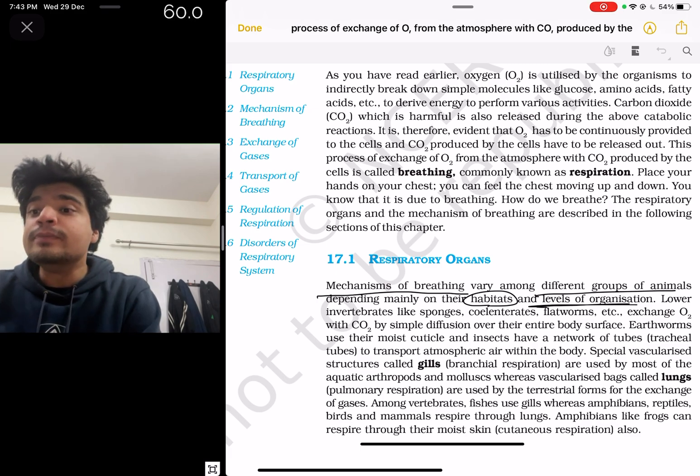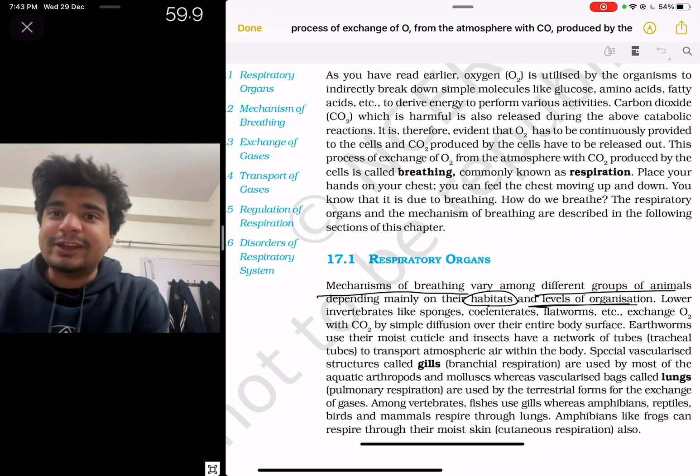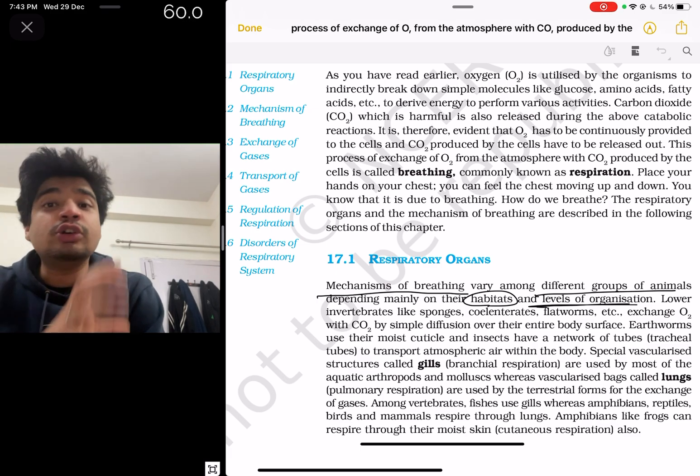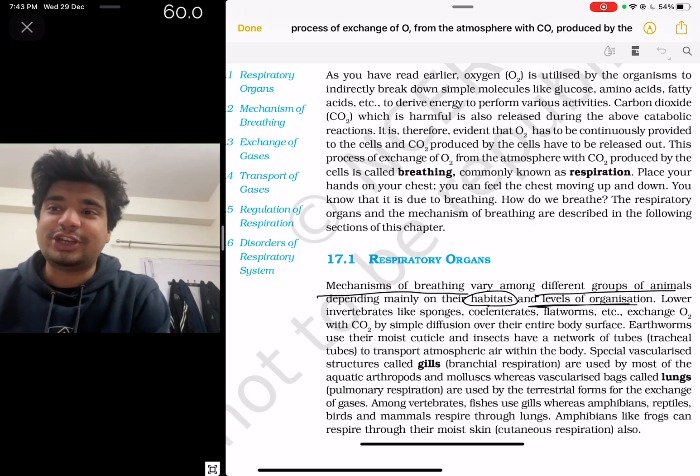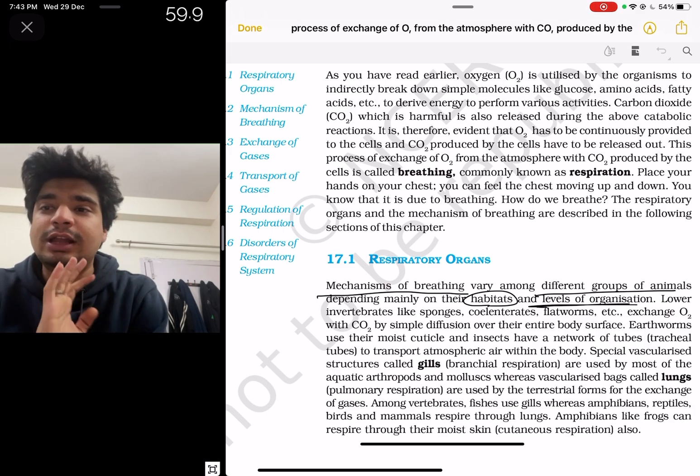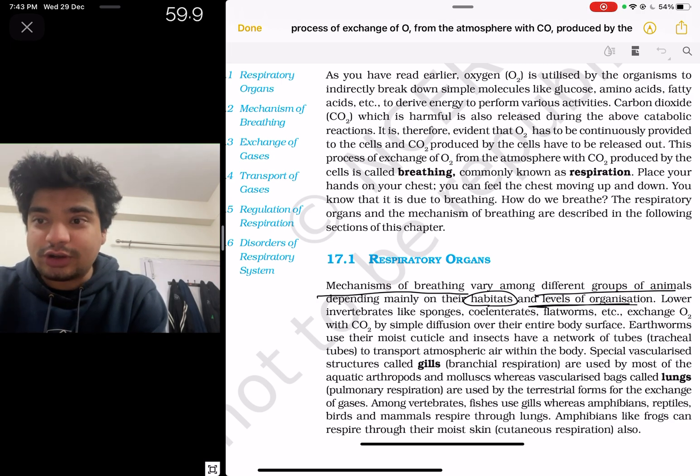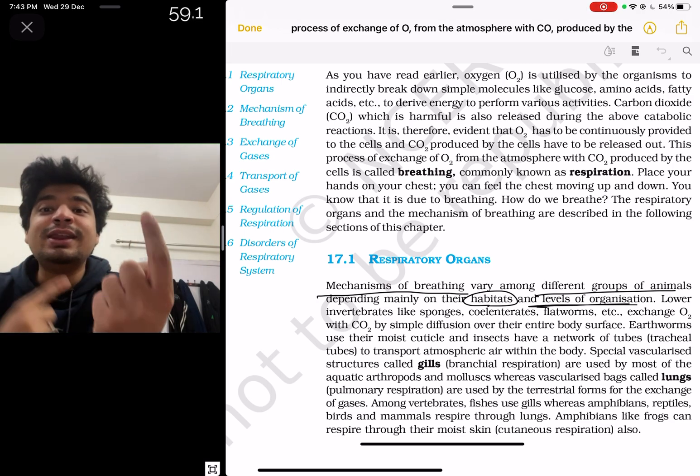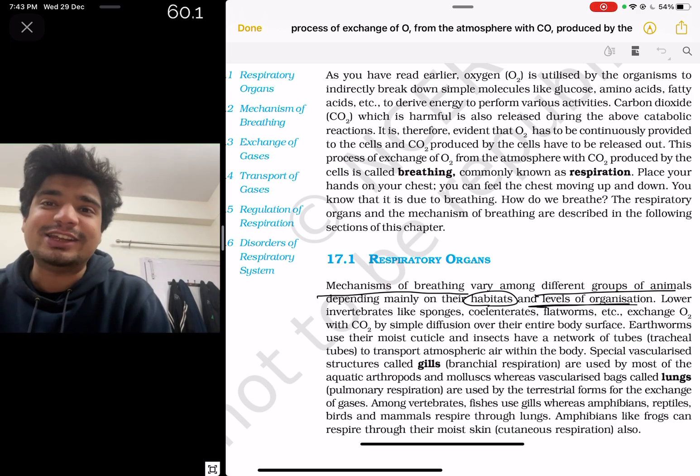Whereas vascularized bags called lungs - lungs are also vascularized bags - we call pulmonary respiration. They are used by the terrestrial forms for exchange. In vertebrates, fish use gills, amphibians, reptiles, birds and mammals use lungs. Amphibians like frogs can also respire through their moist skin, and this is called as cutaneous respiration.